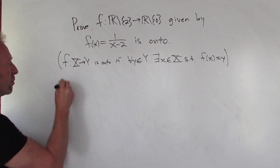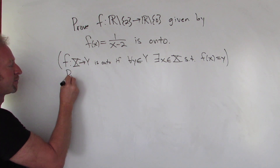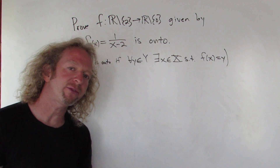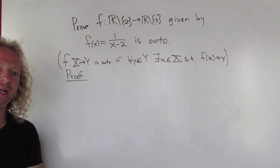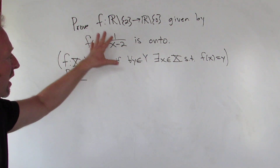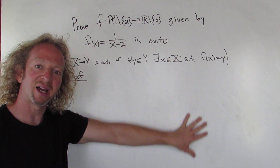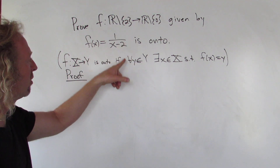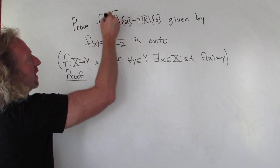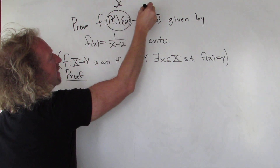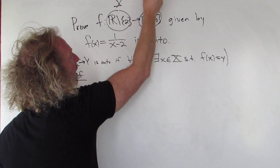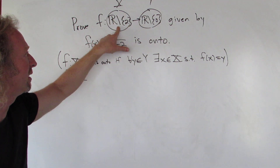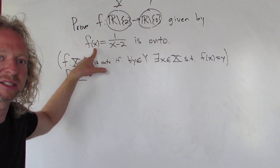Before we write the proof we have to figure it out, so we kind of have to work backwards on the side. We know that this is our capital X and this is our capital Y, so for any little y in capital Y we have to find a little x in capital X such that f of x is equal to y.